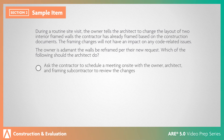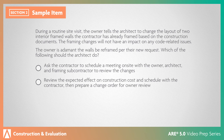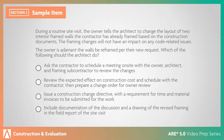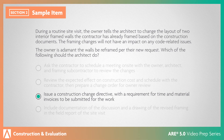The answer choices are: ask the contractor to schedule a meeting on site with the owner, architect, and framing subcontractor to review the changes; review the expected effect on construction costs and schedule with the contractor, then prepare a change order for owner review; issue a construction change directive with the requirement for time and material invoices to be submitted for the work; or include documentation of the discussion and a drawing of the revised framing in the field report of the site visit. The correct answer: per AIA Document A201-2007, General Conditions of the Contract for Construction, a construction change directive is appropriate when a change must take place regardless of time or cost impacts.